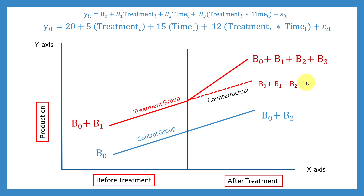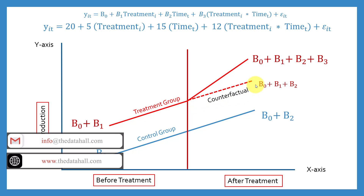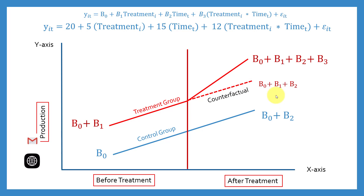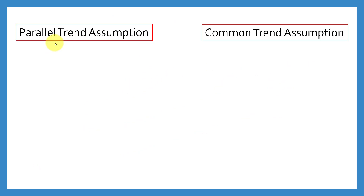The counterfactual would be β0 plus β1 plus β2 — it does not contain β3, which is the impact of the treatment. The dotted line represents the production of the treatment group if it had not received the treatment. If you have understood difference-in-difference, the next thing to understand is the parallel trend assumption, also called the common trend assumption. This assumption must be fulfilled, along with the other OLS regression assumptions.